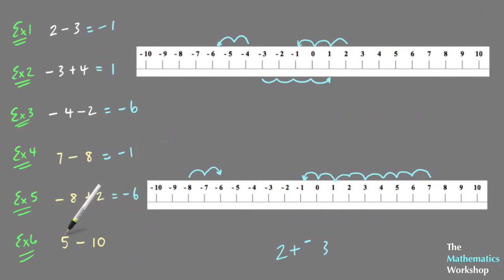And then the last one, 5 minus 10: starting on 5 and then moving 10 to the left. So here's 5, so 1, 2, 3, 4, 5 to get to the 0, and then another 1, 2, 3, 4, 5, so move 10 altogether, and I end up on minus 5. So 5 minus 10 equals minus 5.